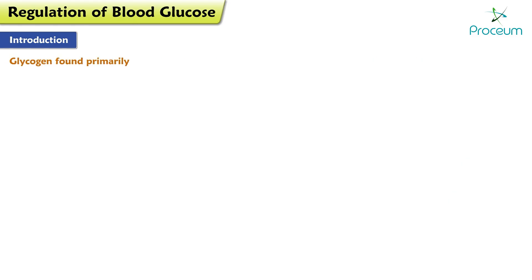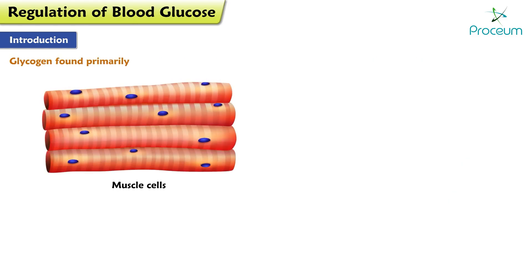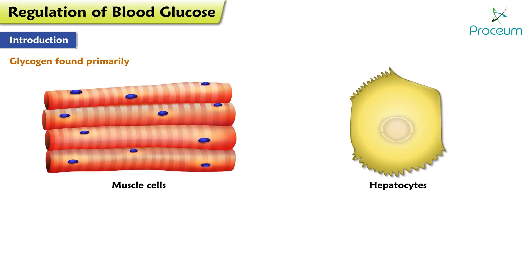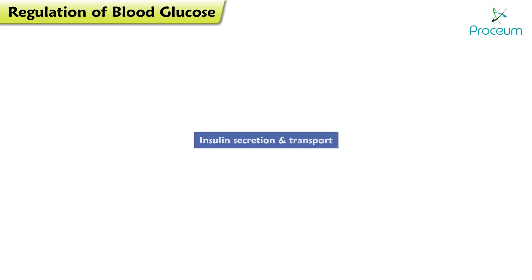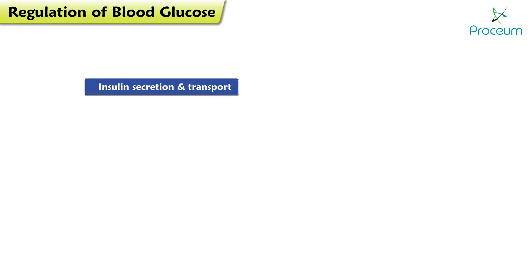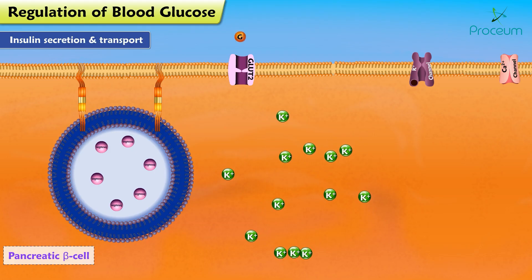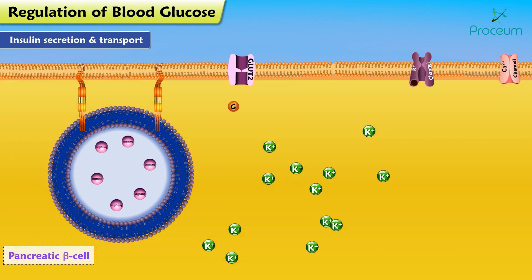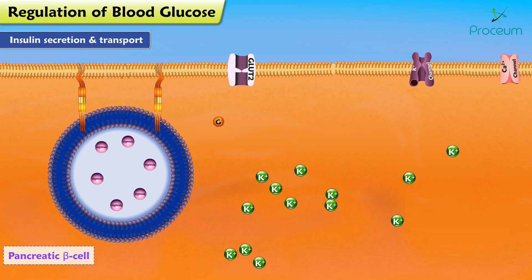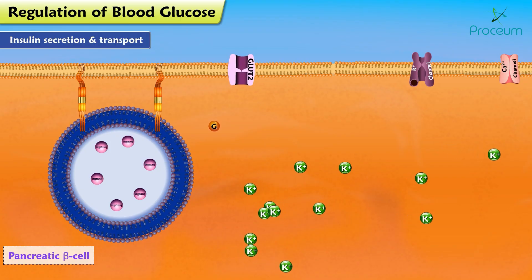Glycogen, found primarily in muscle cells and liver cells — also known as hepatocytes — is the primary short-term storage form of glucose. In this next section, we are going to learn about the secretion and transport of insulin. For insulin to be secreted, glucose must enter the pancreatic beta cell through the GLUT2 receptor by facilitated diffusion.